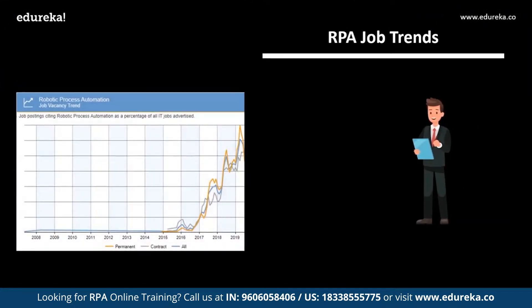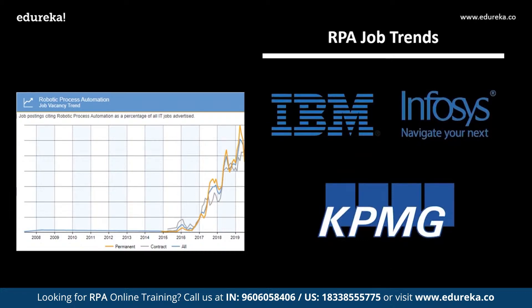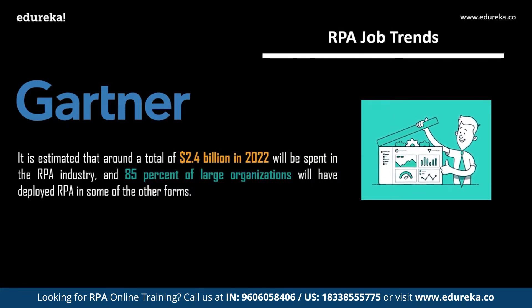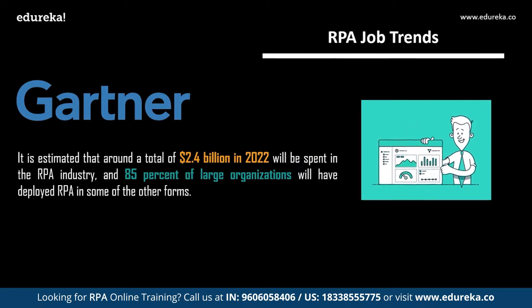The number of RPA developer jobs in the United Kingdom is increasing on a large scale. RPA developer career opportunities will only shoot through the roof, with both startups and well-established companies such as IBM, Infosys, and KPMG offering lucrative salaries. According to Gartner, around 2.4 billion US dollars is estimated to be spent in the field of RPA by 2022, and 85% of large organizations will have deployed RPA in some form.